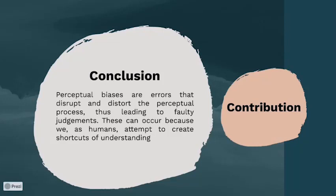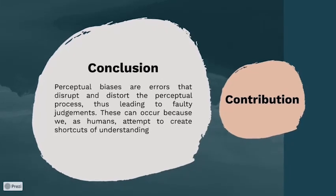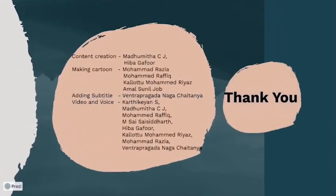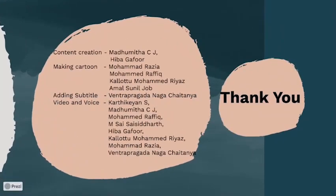Conclusion: Perceptual biases are errors that disrupt the perceptual process, thus leading to faulty judgments. These can occur because we as humans attempt to create shortcuts of understanding. With this, we conclude our presentation, and these are the contributions from our teammates.